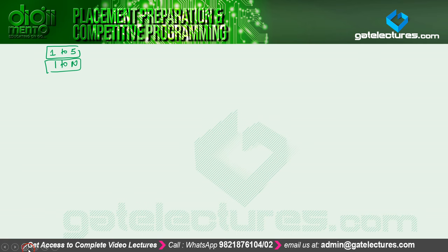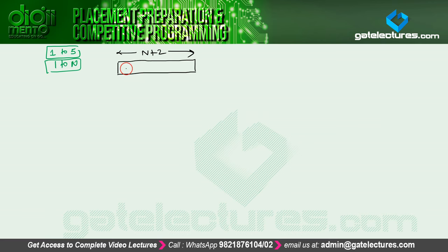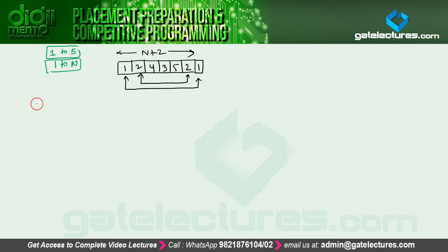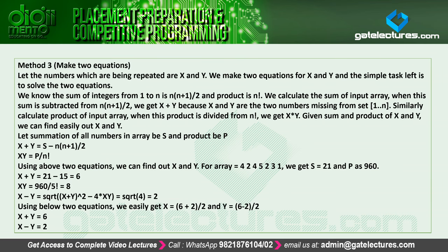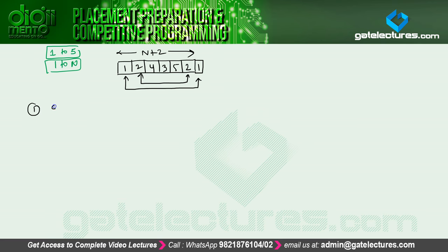We have numbers from 1 to 5, so the array will have a total of 7 index locations — that is n plus 2. Let us take some random numbers between 1 to n: 1, 2, 4, 3, 5, 2, and 1. Here you can clearly see that two numbers are repeating: number 1 is repeating and number 2 is repeating. The solution, method number 3, is about creating equations — finding sum of all the numbers and product of all the numbers.